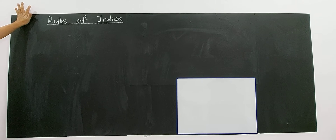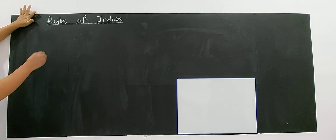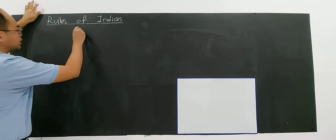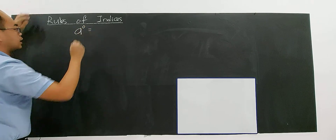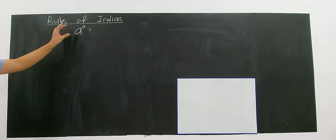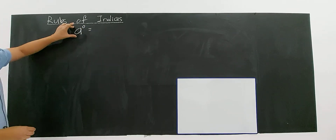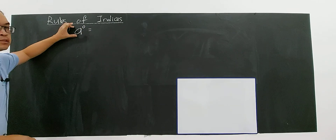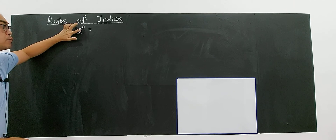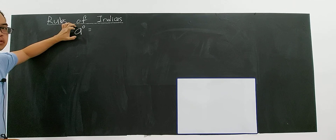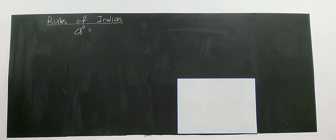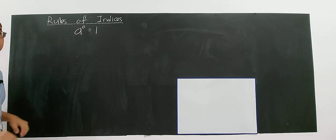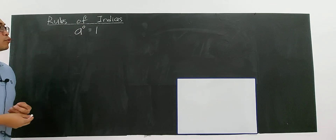The first rule: you must understand A to the power of zero. Any constant — any number to the power of zero, except zero — will give you 1. You will get 1.